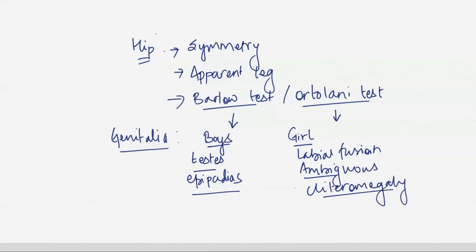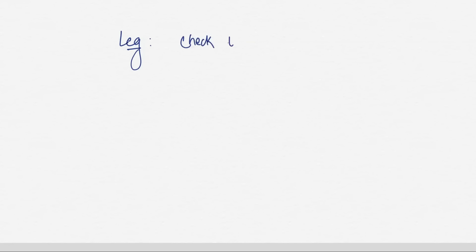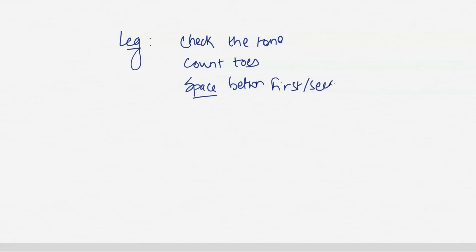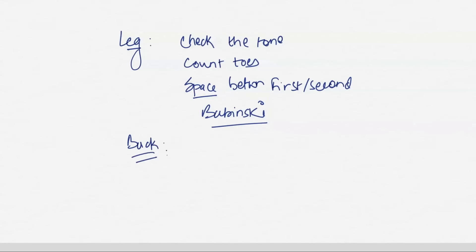In the legs, check the tone, count the toes, and check the space between the first and second toe — increased space is seen in Down syndrome. Check the Babinski reflex; you can ask the student if they know about it before explaining. Then turn the baby to check the back — look for sacral tuft, spina bifida, and sacral dimple. Also check the anus for imperforate anus.